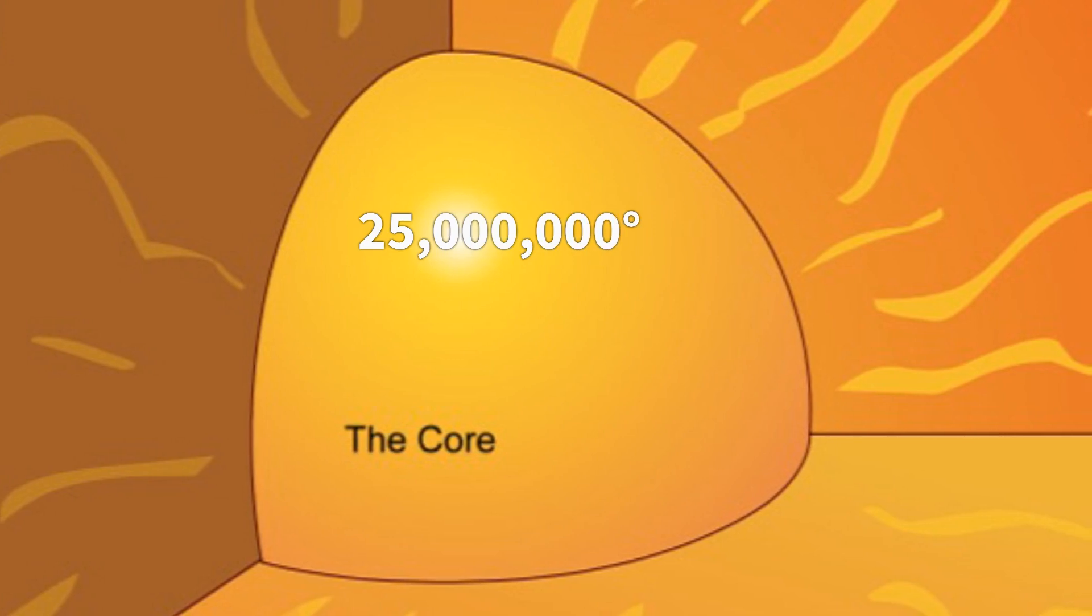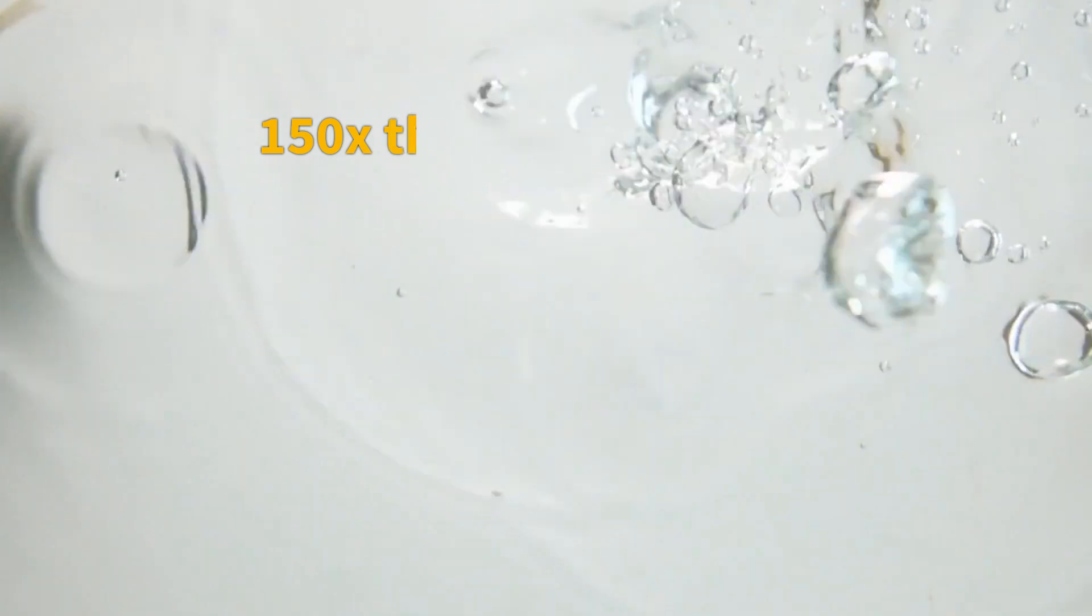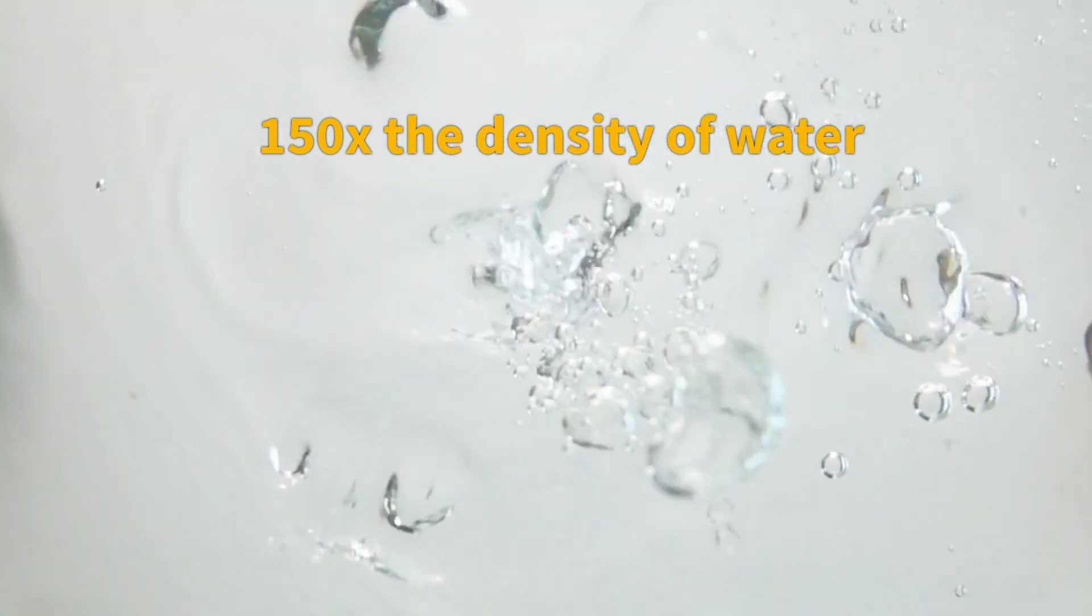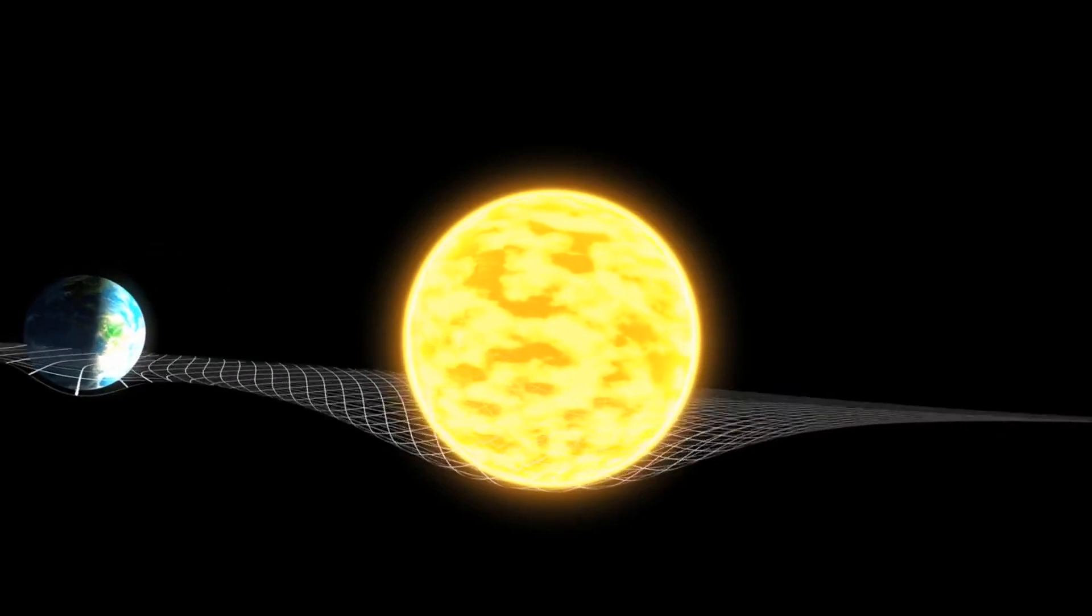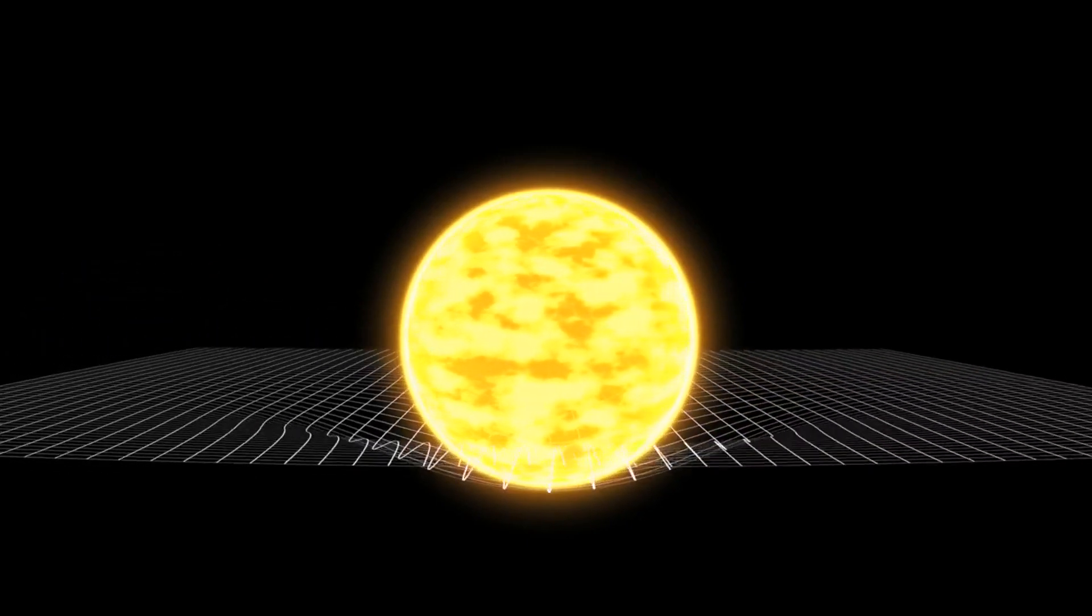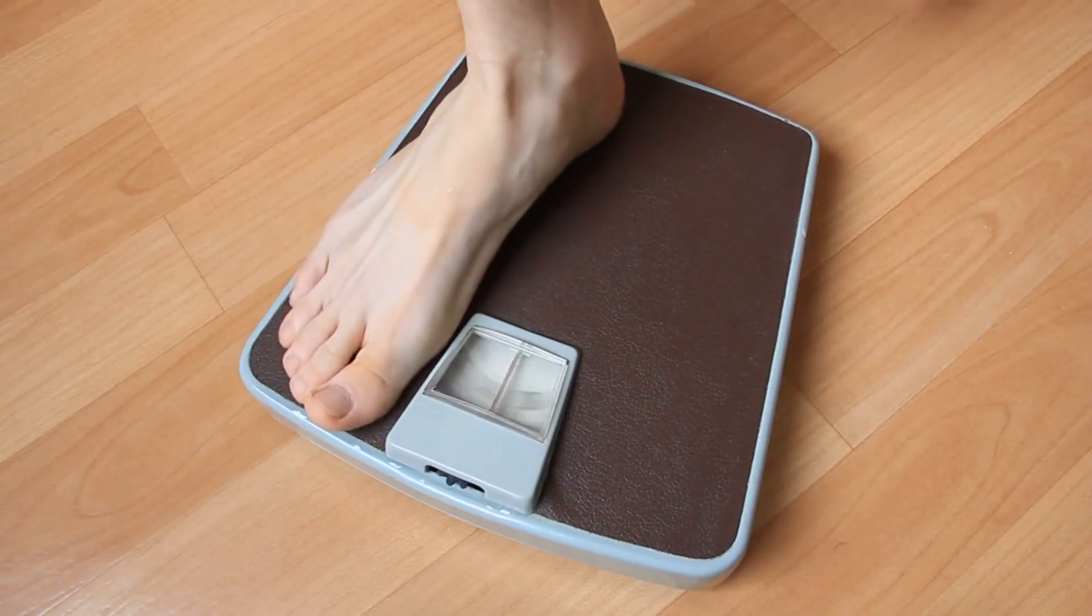Temperatures at the very center can reach up to 25 million degrees Fahrenheit. The core also has an incredible density, nearly 150 times the density of water. This extreme density exists because the Sun's massive gravity pulls material inward. The density is estimated to reach over 100,000 kilograms per cubic meter.